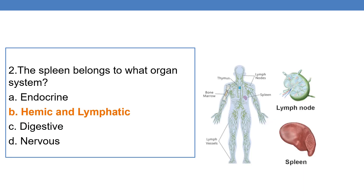Next question: the spleen belongs to what organ system? The spleen mainly belongs to the hemic and lymphatic organ system. Here you can see all the lymphatic organs: thymus, bone marrow, lymph vessels, spleen, and lymph nodes. So, the spleen belongs to the hemic and lymphatic system.